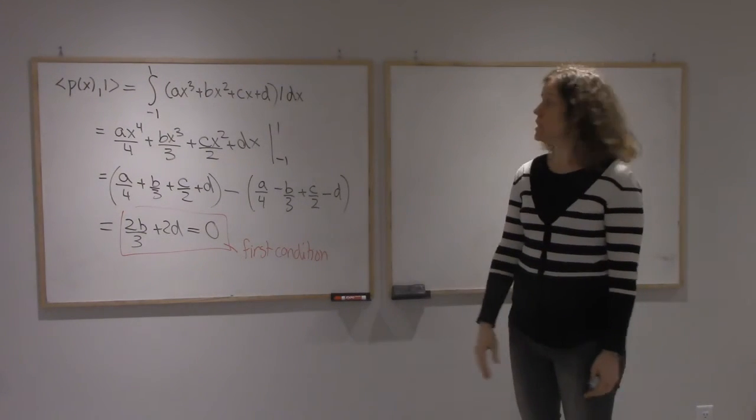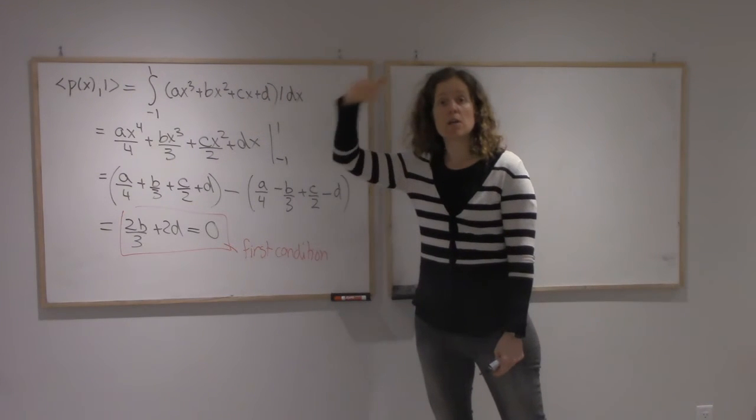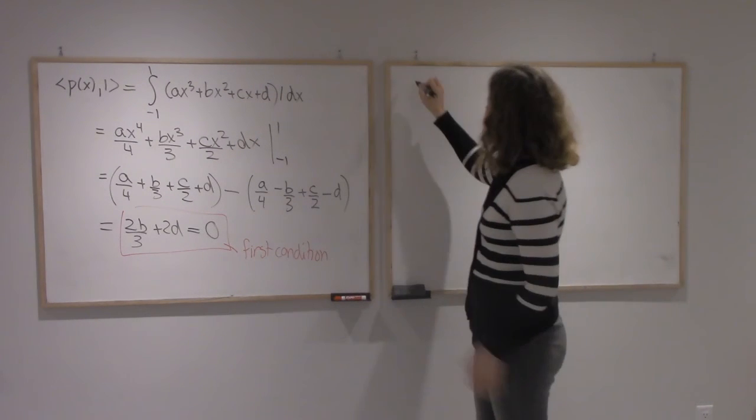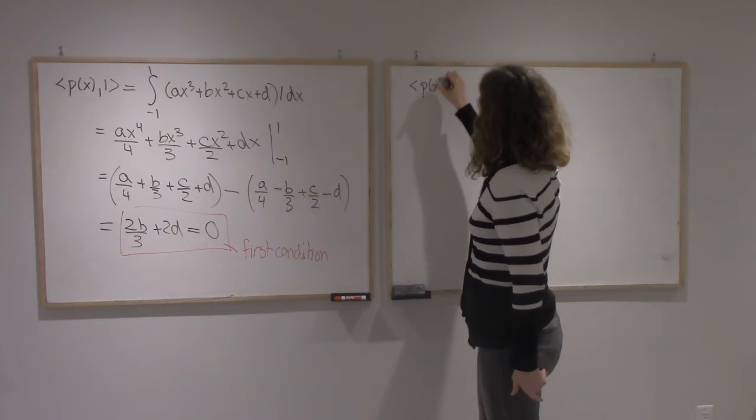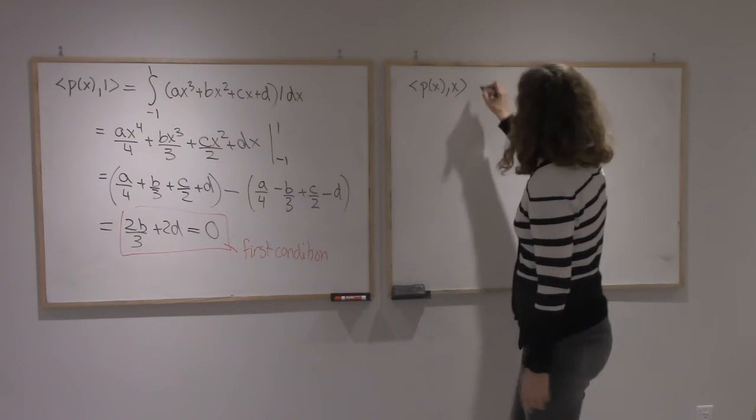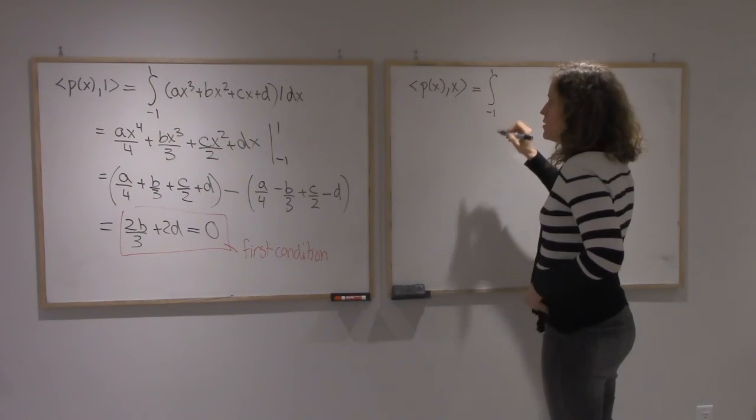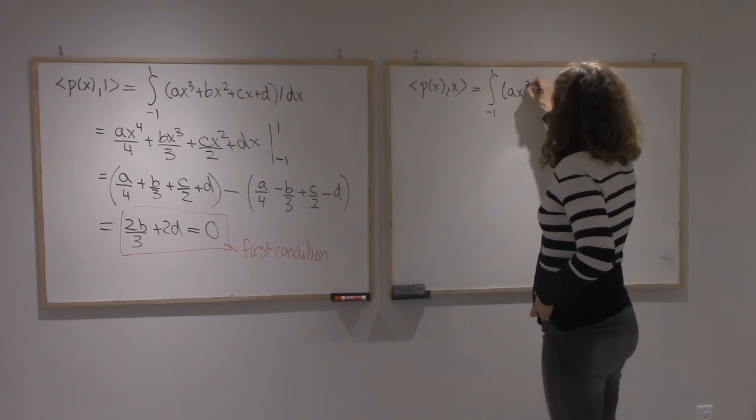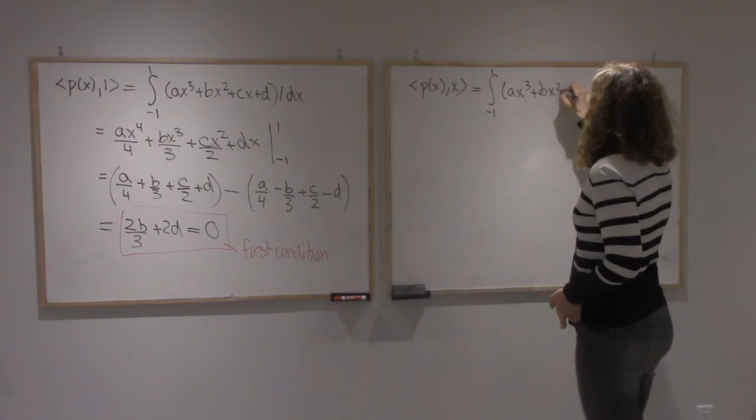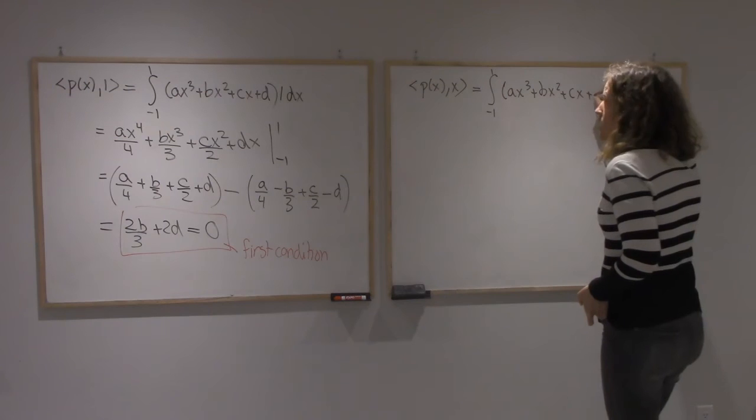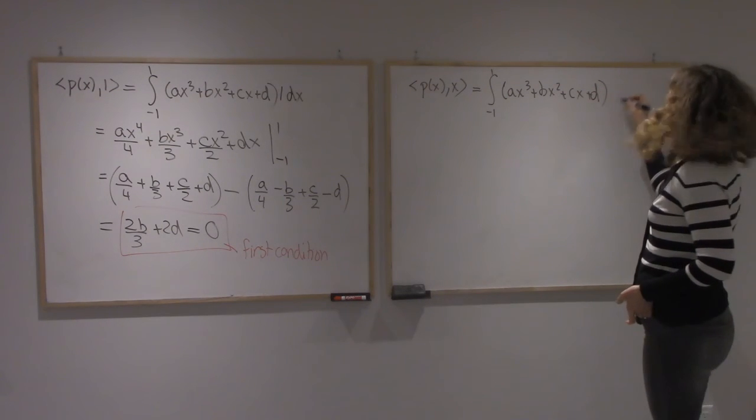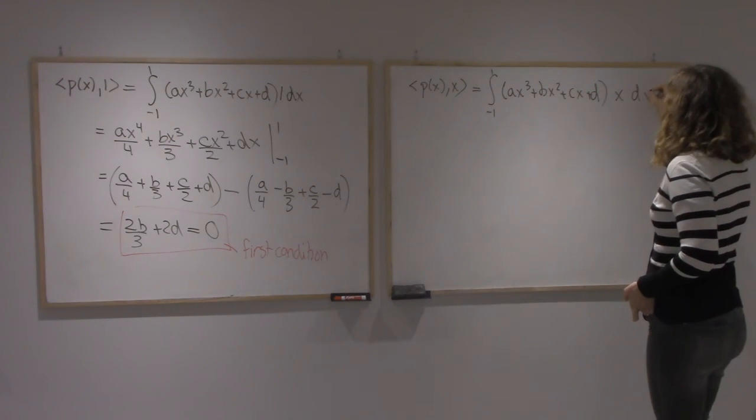Alright, second condition. I need P(x) to be orthogonal to x. So we must look at the inner product of P(x) with x. That will be the integral from minus 1 to 1 of Ax³ + Bx² + Cx + D, but instead of timing it by 1, I'm going to time it by x.